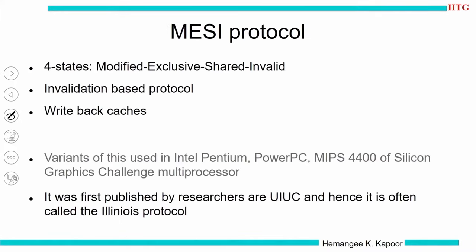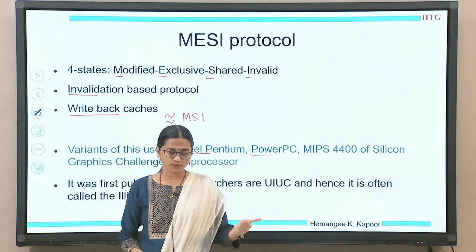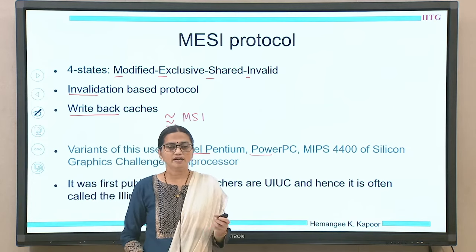We are discussing a four-state MESI protocol. The four states are: M for modified, E for exclusive, S for shared, and I for invalid. It is an invalidation-based protocol, and this is for write-back caches. All these conditions are almost similar to the MSI protocol. This protocol is important to study because it is prevalent — variants of it have been used in the Intel Pentium processors, the PowerPC, and the MIPS 4400 series.